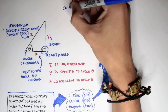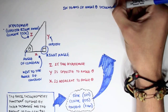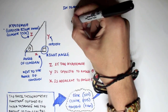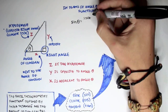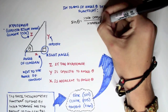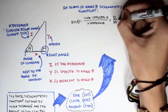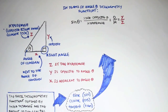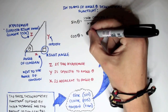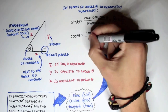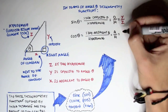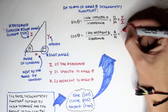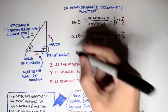Looking at the right angle triangle on the left as an example: sine of the angle is equal to the side opposite the angle divided by the hypotenuse — or O divided by H, opposite over hypotenuse. In the left triangle case, this would mean Y over Z. Next is cosine: cos of the angle is equal to the side adjacent to the angle, abbreviated A over H, adjacent over hypotenuse. In the left right angle triangle's case, it's X over Z.